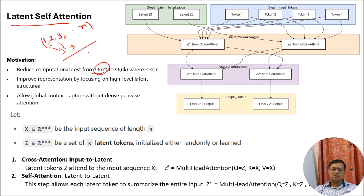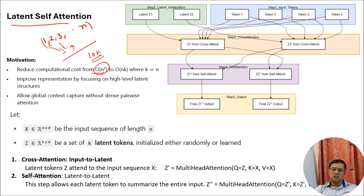But suppose your total number of token length is 10K or more than 10K. In that case, this process will be very costly. So we try to either use sparse attentions or anything else.